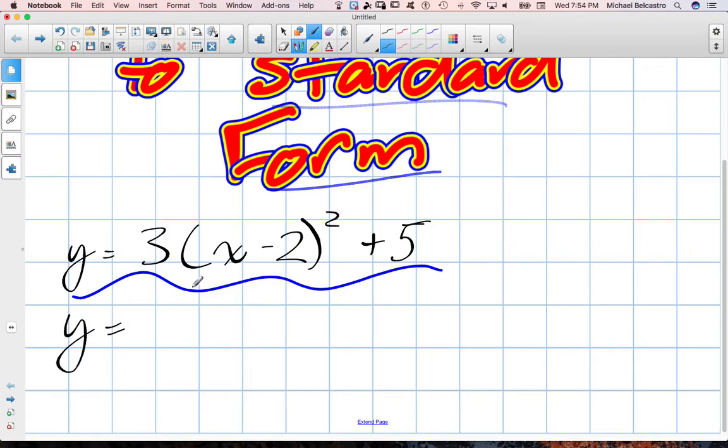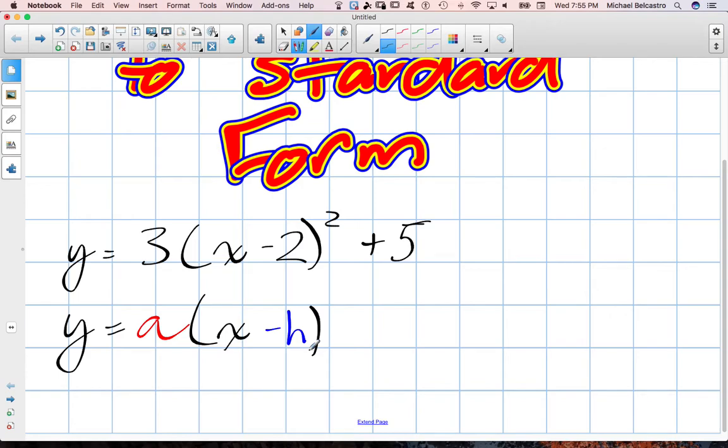Vertex form is commonly written as the very first term being called A. The term within the brackets they usually call H, and that's the horizontal place of the vertex. And then the final term they sometimes call K, which is the Y value of the vertex.